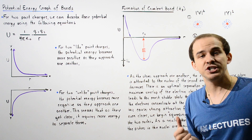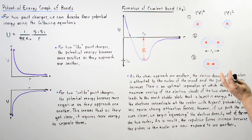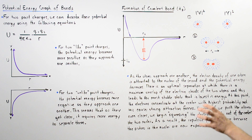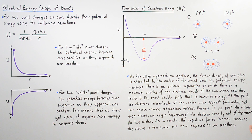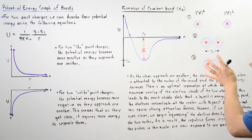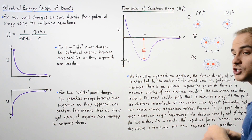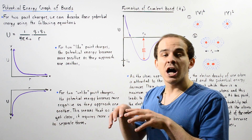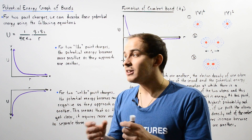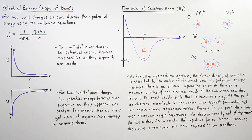As energy decreases, our molecule becomes more stable. It turns out there is an optimal separation distance at which there is maximum overlap between the electron clouds — the dense electron density of our two atoms. This leads to the most stable configuration, the most stable molecular electron cloud, meaning our molecule at this point is the lowest in energy.